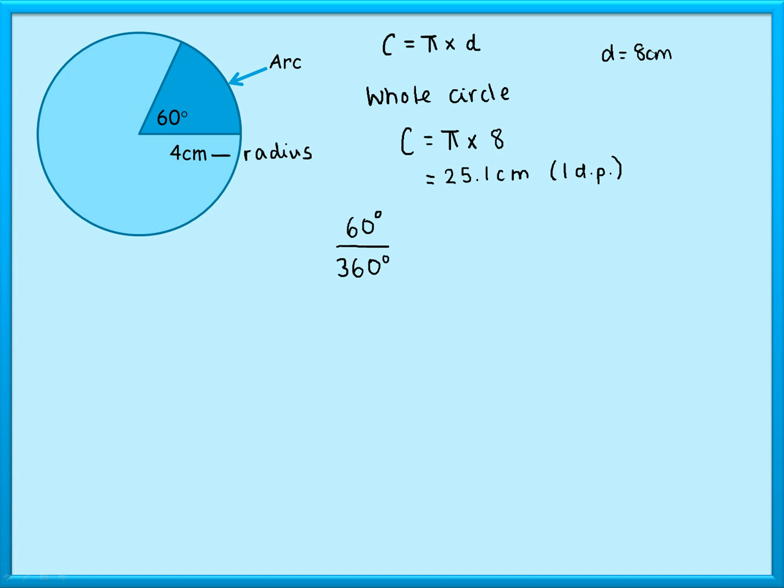Now if you cancel that fraction down, you'd actually find out that that was one-sixth of the circle, which makes sense because that looks like about a sixth chunk of the circle. So I've got 60 out of 360 degrees of that answer, so I've got 60/360 of π times 8.